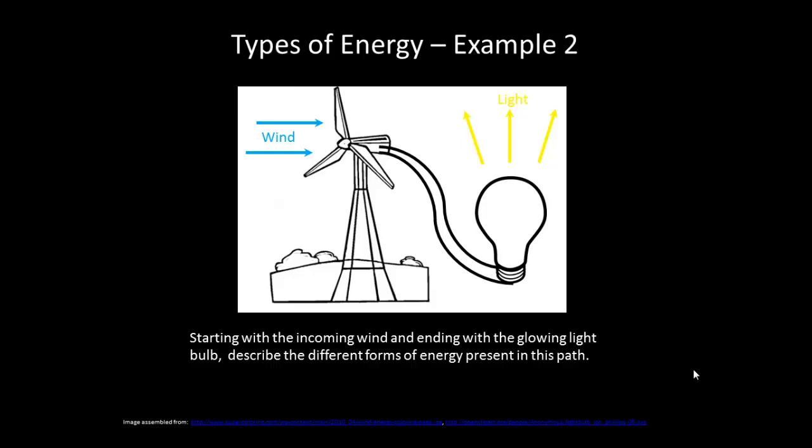Okay, so starting with the wind, we of course have wind energy. The wind energy causes the turbine to spin, which is a form of kinetic energy. This kinetic energy is then converted into electric potential energy, which then causes the light bulb to send out light, which is a form of light energy, and then also thermal energy, causing the molecules around the light bulb to start moving faster.